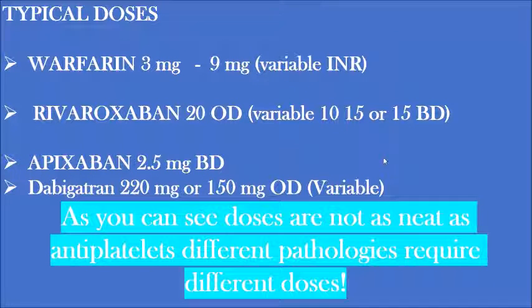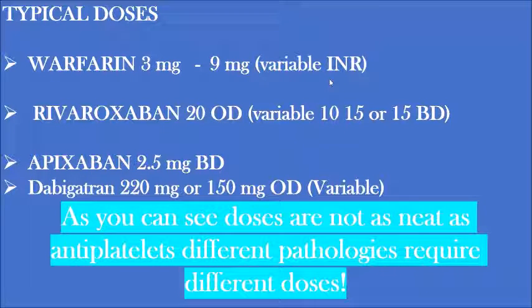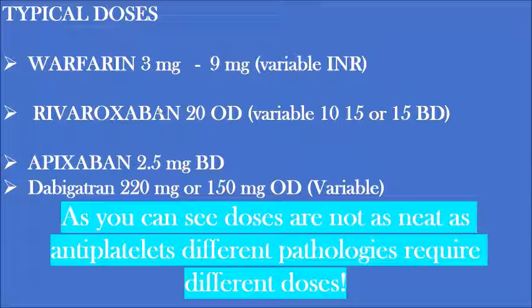Typical doses: warfarin is a very complex medicine. It's effective and prevents clot formation on both the arterial and venous sides, but the dose is variable and it has many interactions. When started, it has a complex titration dose from 3mg to 9mg, depending on the INR — the time it takes for the blood to clot compared to people not taking anticoagulants. Rivaroxaban is usually 10mg, 15mg, or 15mg twice daily depending on the indication. Apixaban and dabigatran dosing is also indication-specific and fairly complex.